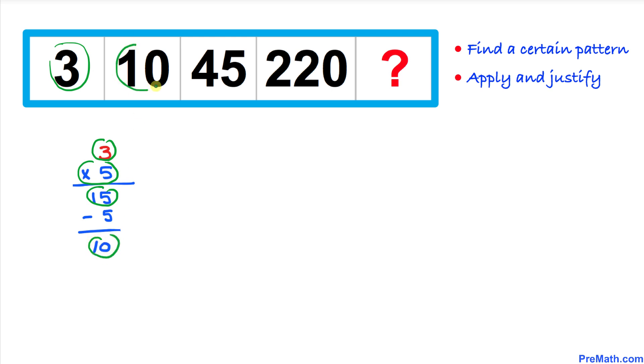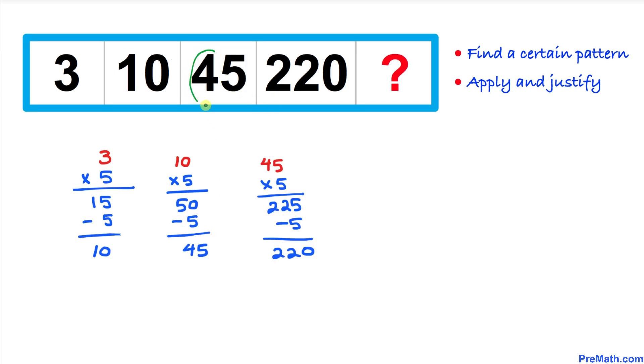Now let's focus on the next number, which is 10. I just copy down over here. Likewise, I am going to multiply by 5. We are going to get 50. Take away 5 is going to give us 45, and that's what we got it over here.